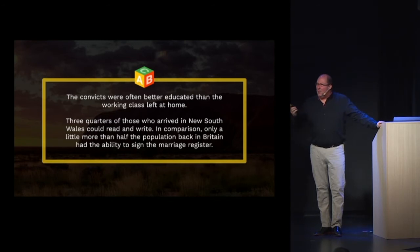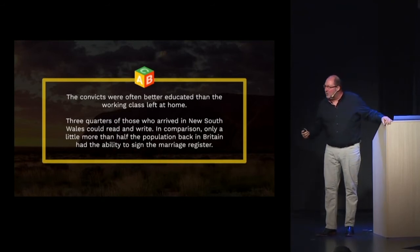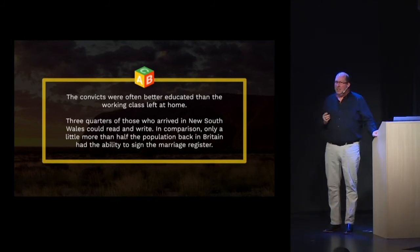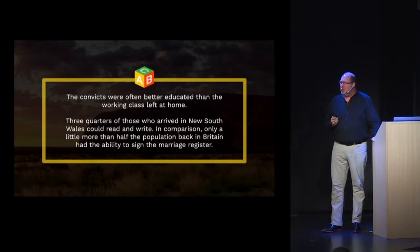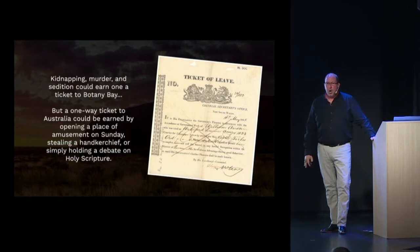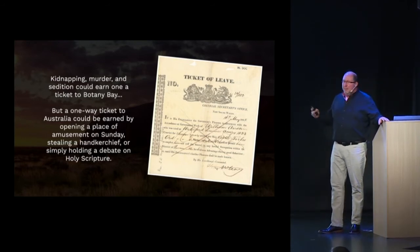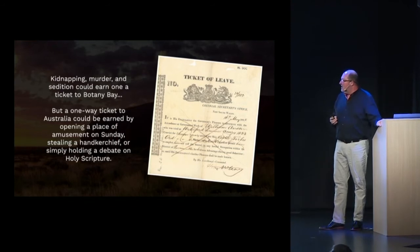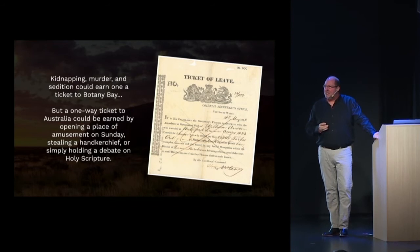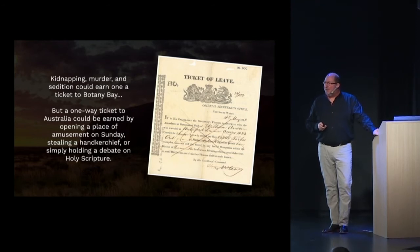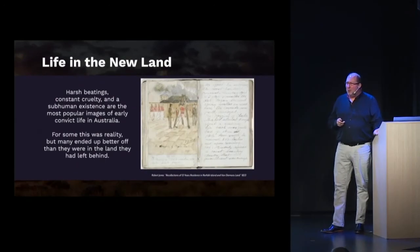Britain wanted this colony to be a success — it became less about shipping undesirables than shipping capable people to make this place succeed. Kidnapping, murder, and sedition would get you a ticket to Botany Bay, but so would opening a place of amusement on a Sunday, stealing a handkerchief, or holding a debate on Holy Scripture. They were looking for anyone and everyone they could to fill those ships.